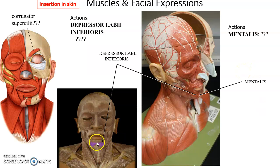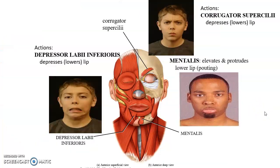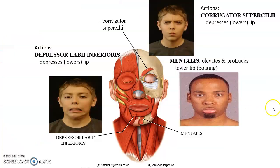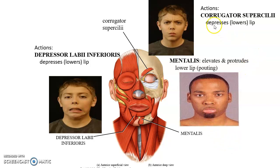The depressor labii inferioris inserts into the lower lip and pulls it down when it contracts. The mentalis muscle at the chin, when contracted, causes the lower lip to elevate and protrude, giving a pouty face. The corrugator superciliae, located above the eyes, when contracted, depresses the eyebrows and causes a scowl.